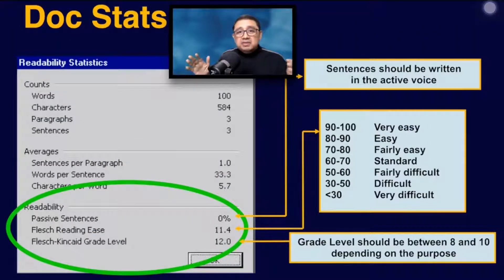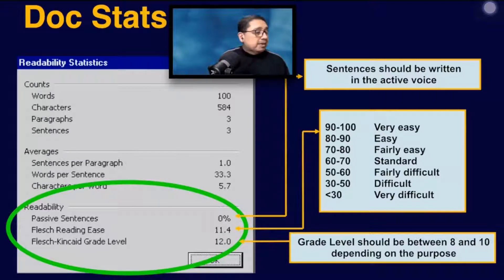Let me explain what readability statistics looks like. This is the prompt that you will get at the end of spelling and grammar checks for your documents where the Flesch-Kincaid app has previously been turned on. At the end of each spelling and grammar check, you will normally get a doc stats or readability stats summary.